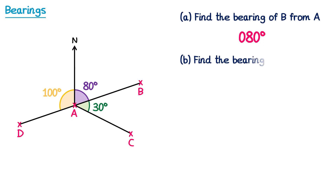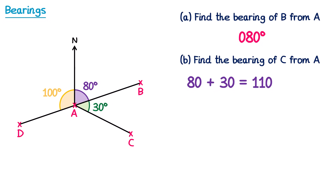For part B of this question, we're going to find the bearing of C from A. This means we're stood at A, facing north and we turn to face C. Now we've turned through the purple angle of 80 and the green angle of 30, so we add those two together. 80 plus 30 is 110, so the bearing is 110 degrees.